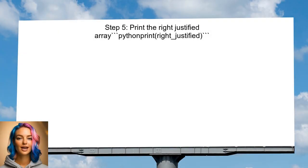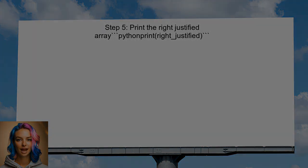Finally, the user can print the right justified array to see the result. This will show the elements greater than zero aligned to the right.